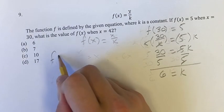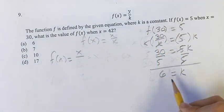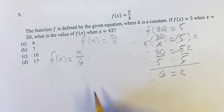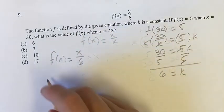So now we know that f(x) equals x over k, which is x over 6, since k equals 6. Now we can find the value of f(x) when x equals 42.